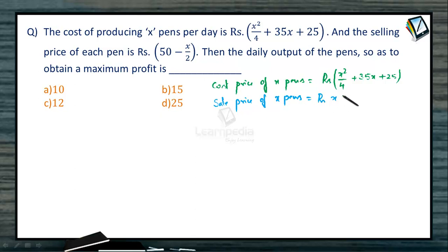It would be x times (50 - x/2). Now this is the sale price and this is the cost price. Can we calculate the profit from them? Therefore, profit is the sale price minus cost price.